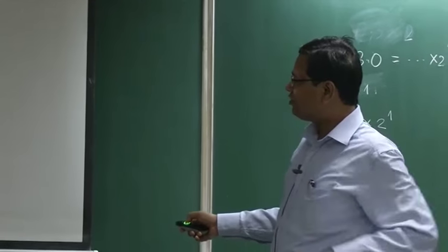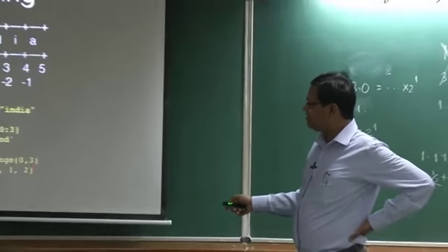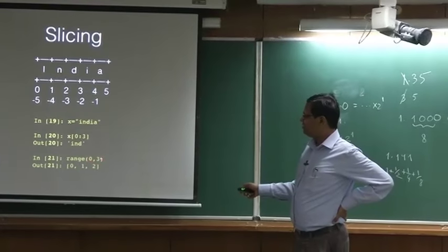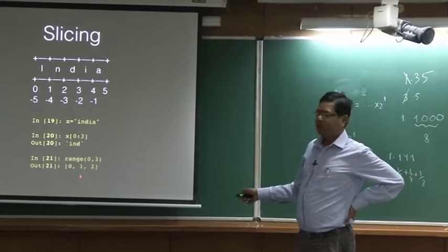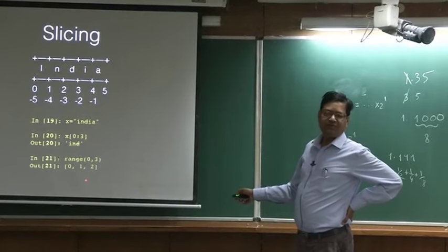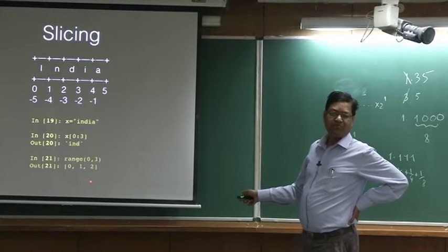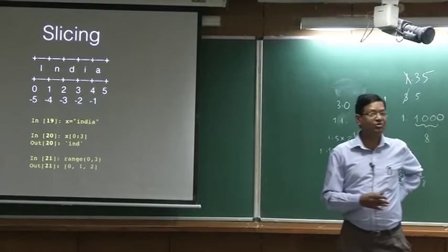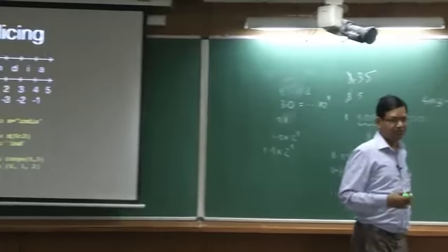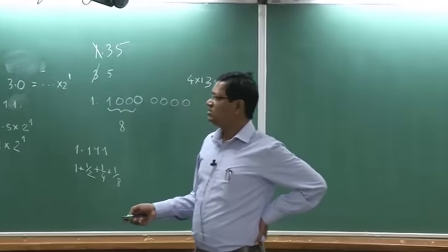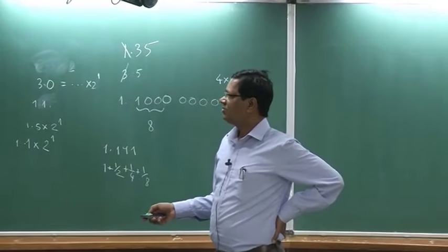Range is also a function. You can use range(0, 3) and it will give you 0, 1, 2. You can also say range(3) which is the same thing: 0, 1, 2. range(3) is not 0 to 3, it is 0 to 2. That is about list.